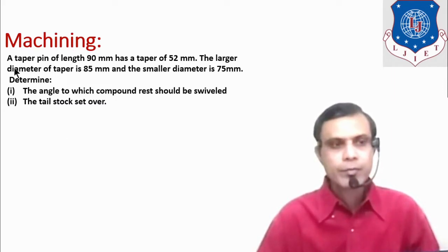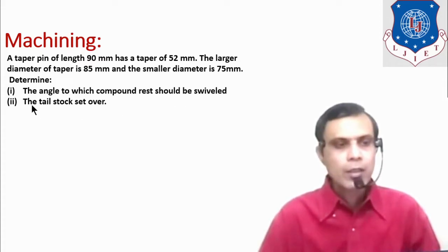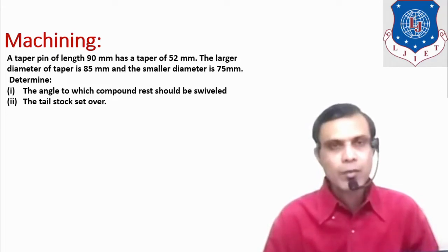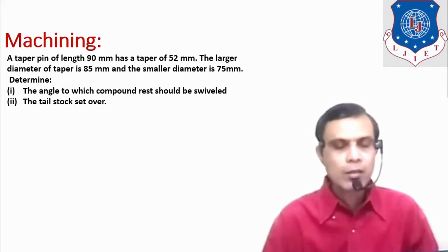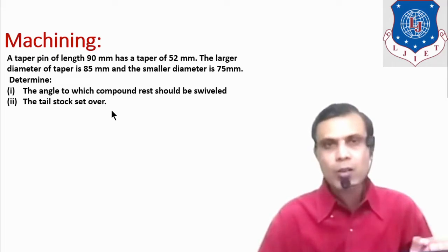Let's see the given data. A taper pin of length 90 mm has a taper of 52 mm. The larger diameter of taper is 85 mm and the smaller diameter is 75 mm. Determine the angle to which the compound rest should be swivelled, and second, the tailstock set over distance. This problem is about taper turning, and there are certain methods by which we can produce the taper on a given workpiece.